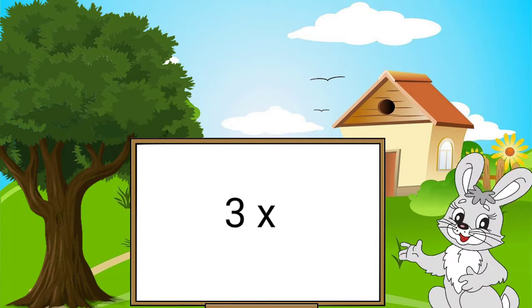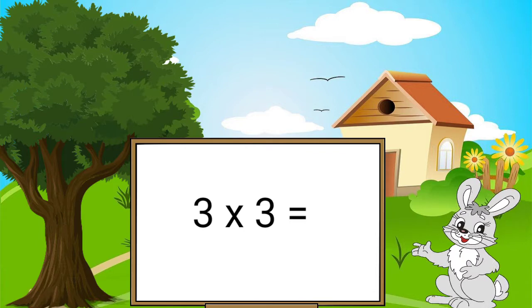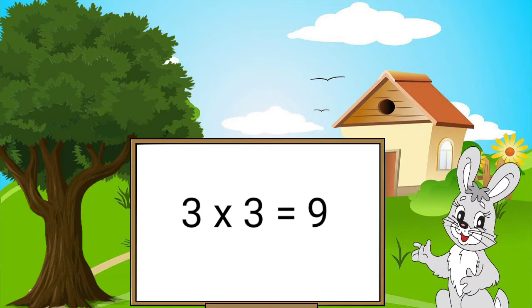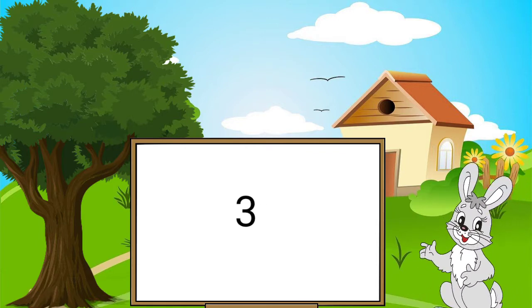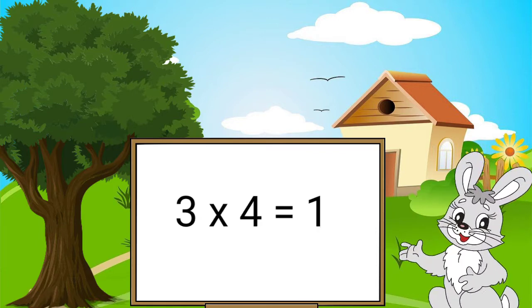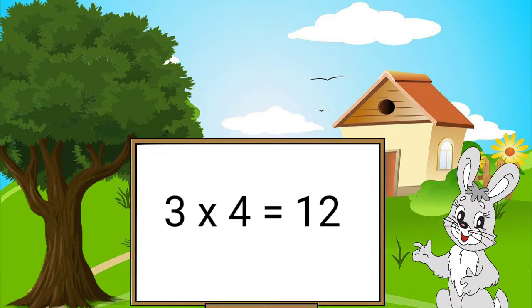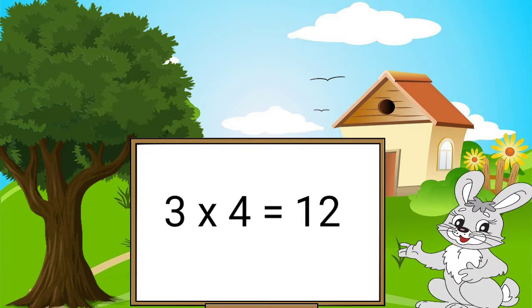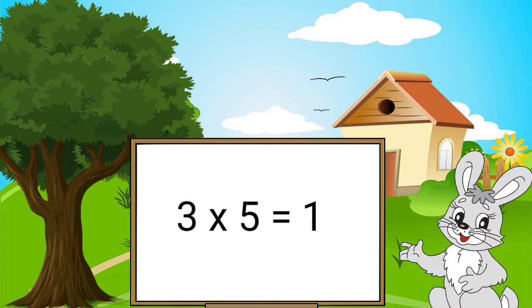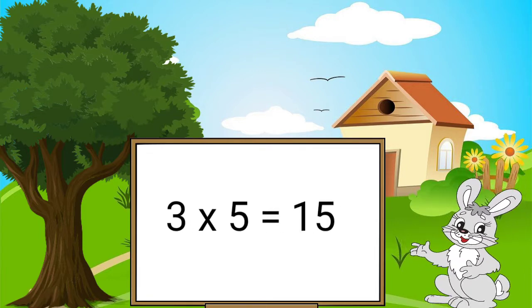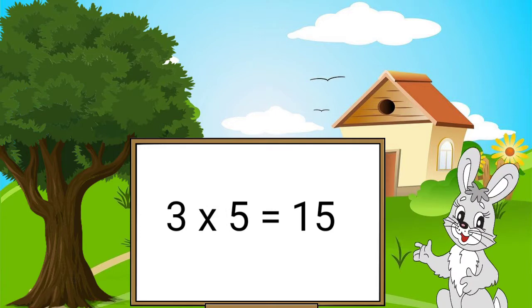Three threes are nine. Three fours are twelve. Three fives are fifteen.